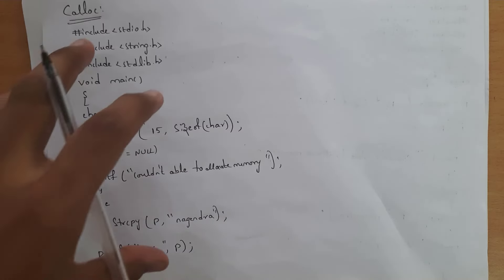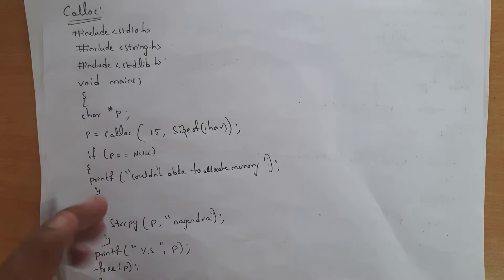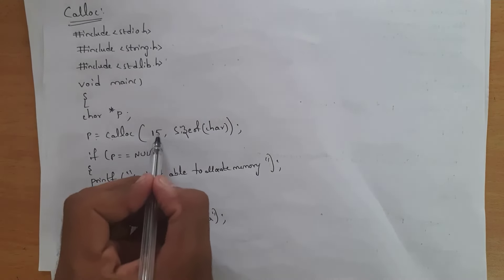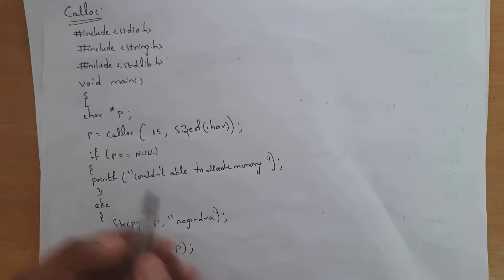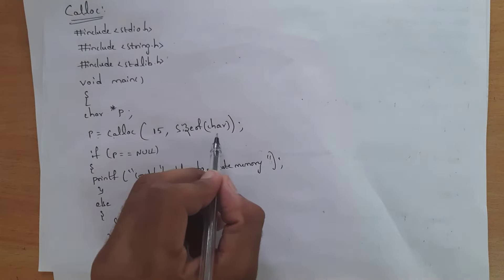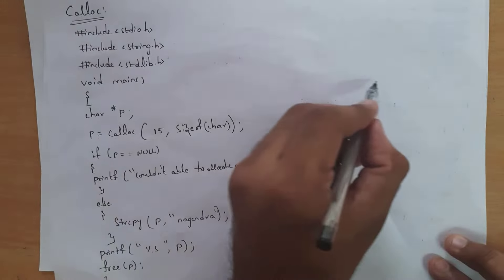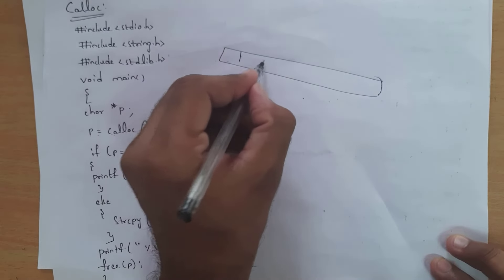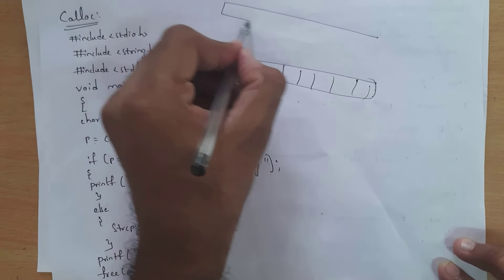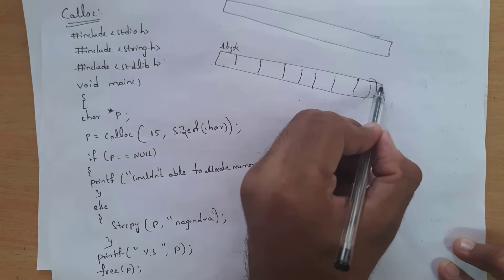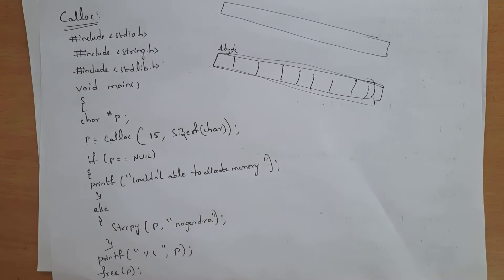Next I will explain the program for calloc function. This program is the same as malloc, the only difference is that here you write p = calloc(15, sizeof(char)), whereas before we written malloc(15 * sizeof(char)). For calloc you write 15 comma sizeof(char). Whenever you write like this, calloc creates 15 small blocks and each block occupies one byte of memory, whereas malloc creates a single block of size 15.